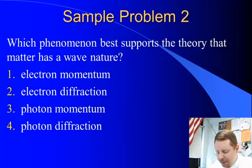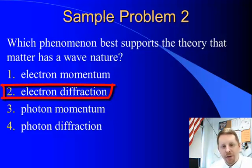Which phenomenon best supports the theory that matter has a wave nature? Electron momentum, electron diffraction, photon momentum, or photon diffraction? Well, wave nature, that means we must be looking for diffraction. Diffraction is a wave property only. And if we want to support the theory that matter has a wave nature, we should look for something that has diffraction of matter. Electrons are matter and they diffract, so our best answer here must be two, electron diffraction.